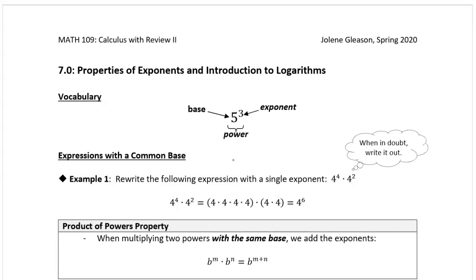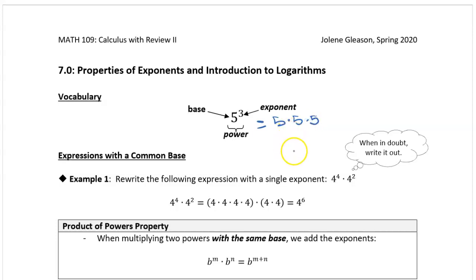Five to the third power just means five times five times five. That's just what it means, and I know you know that. It's just a shorthand way of writing repeated multiplication.